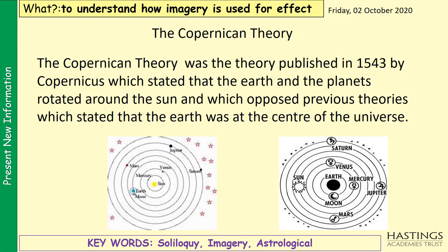A key contextual point for this scene is something called the Copernican Theory, published in 1543. It stated that the Earth and the planets rotated around the Sun, which opposed previous theories that stated the Earth was the centre of the universe. At this time period, before Shakespeare had written Romeo and Juliet, people discovered a lot more about the Sun, the stars and astrology — the study of space — and found out that the Sun is the centre of the universe.